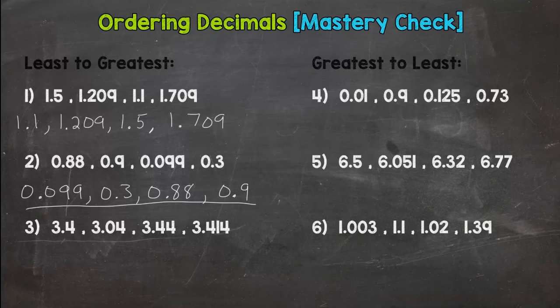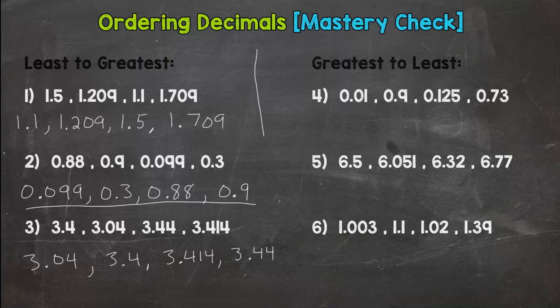Okay, so number three, we have a lot of threes and a lot of fours there, so you have to be careful with this one. Our smallest in value is 3.04. Next would be 3.4, then 3.414, and then 3.44.